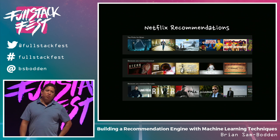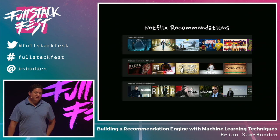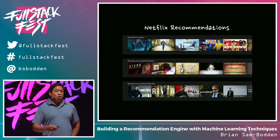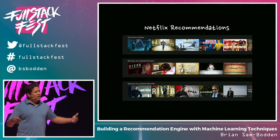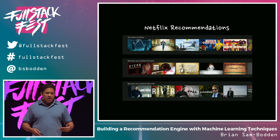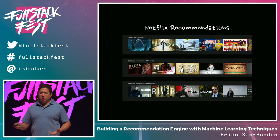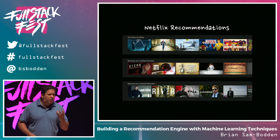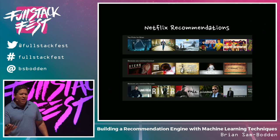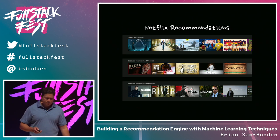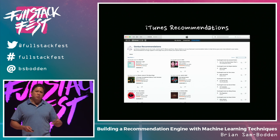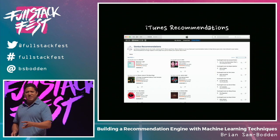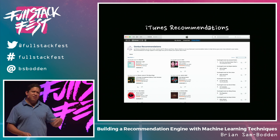Netflix is also at the forefront of recommendations. Netflix uses information about users and their behavior, other users and their behavior, and also about the items themselves. Combining those two concepts is becoming a trend. Early on, recommendation systems did one or the other — either use the collective intelligence of the masses, or try to figure out who you are, what you want, and what the item is actually about. iTunes seems to have dropped the ball in the last five years, even though Siri and other systems have advanced so much.